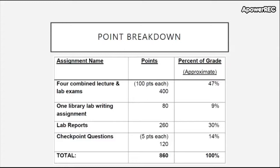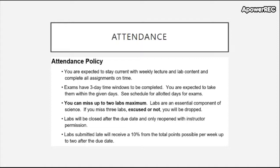Here's what the grade breakdown looks like: four combined lecture and lab exams worth 100 points each — roughly 47% of your grade — one library lab writing assignment worth 80 points, lab reports worth 20 points each for a total of 260, and checkpoint questions totaling 120 points across approximately 24 lectures. You may earn a total of 860 points. We may update this breakdown as we go if lectures are canceled.